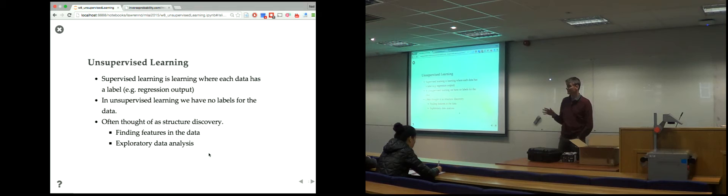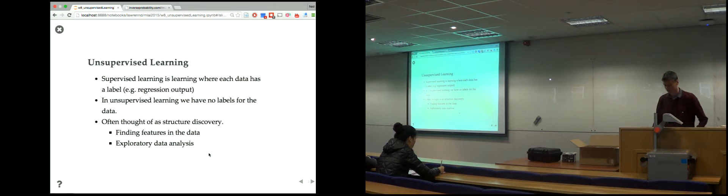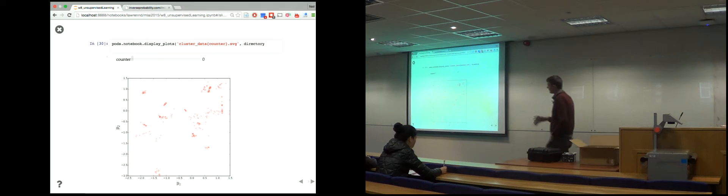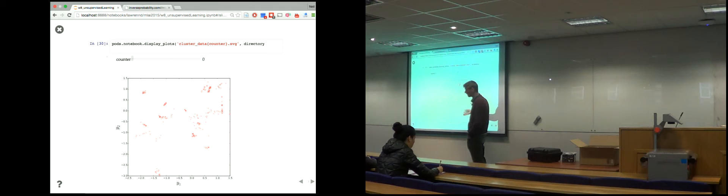I've created a little example dataset. This dataset looks quite complex. In unsupervised learning, you may be given a dataset like this — this is a two-dimensional dataset, but it may be much higher-dimensional. I've chosen two dimensions so I can plot it. All you're given is a Y1 and a Y2; there are no inputs associated with them. Your data is just a matrix of Y.